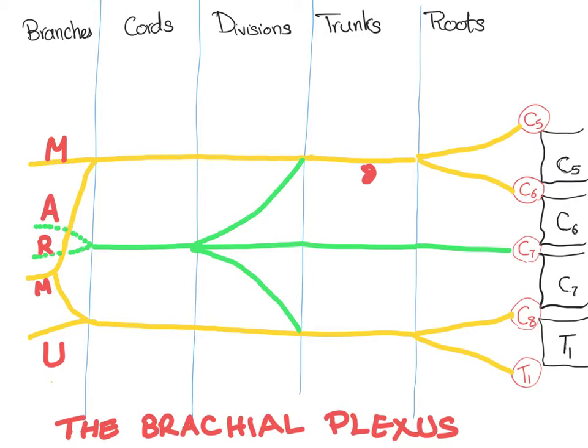What about the divisions? Every single trunk will give an anterior division and a posterior division. Anterior division. What about its posterior division? Let's draw it. It will be like this. Then here, anterior division and posterior division.